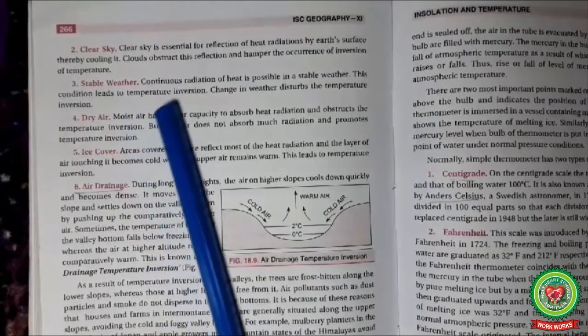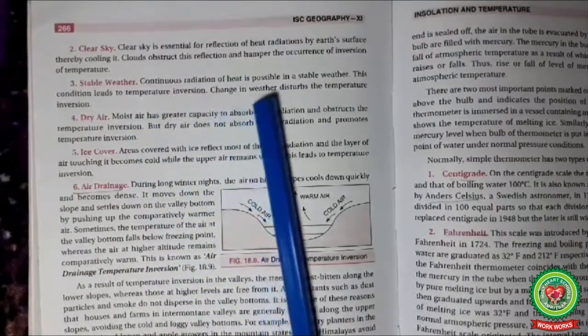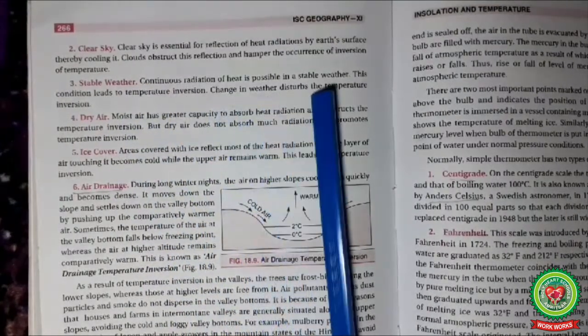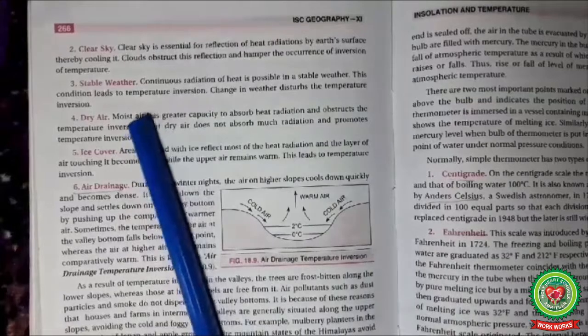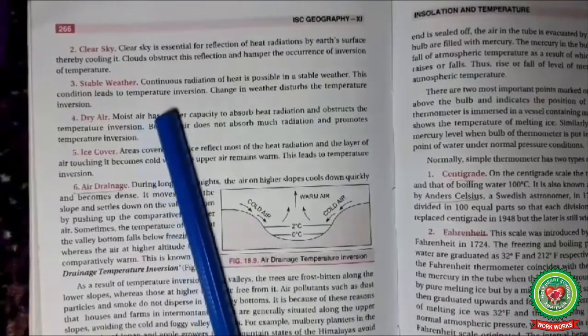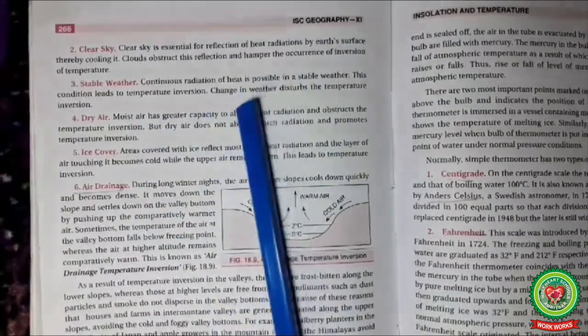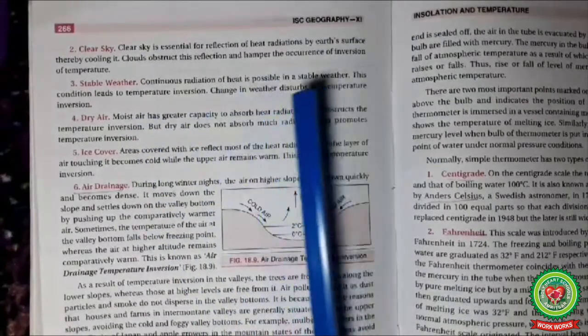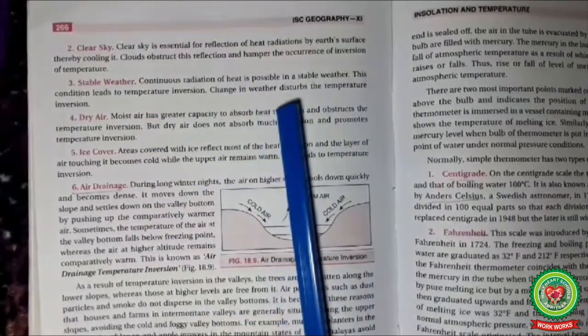Stable weather: continuous radiation of the Earth is possible in stable weather, which leads to temperature inversion. But if the weather is not stable — if it is disturbed — then it will not lead to temperature inversion.